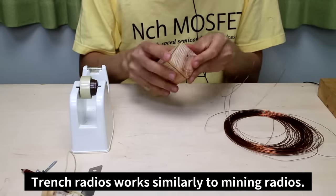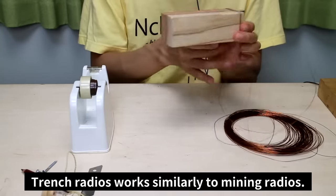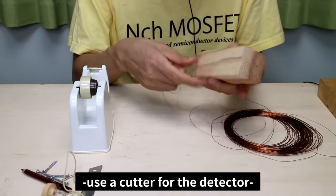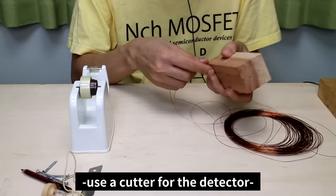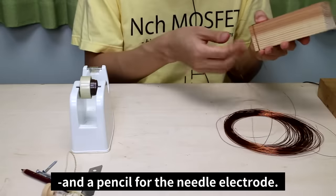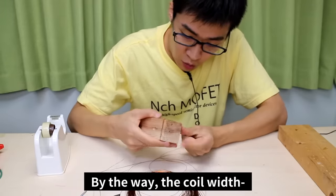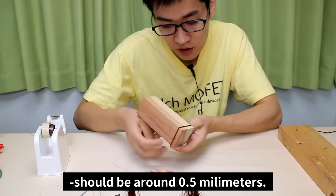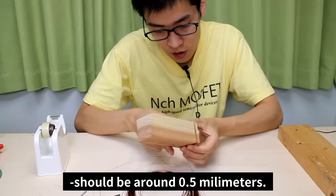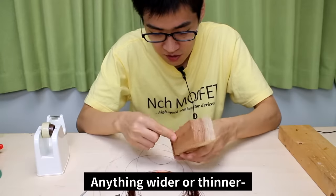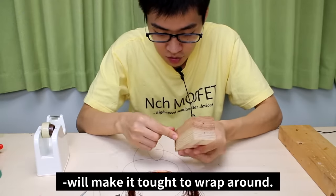Trench radios work similarly to mining radios. However, trench radios use a cutter for the detector and a pencil for the needle electrode. By the way, the coil width should be about 0.5 mm. Anything wider or thinner would make it difficult to wrap around.